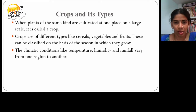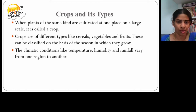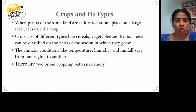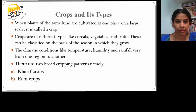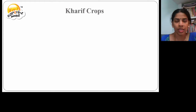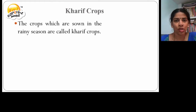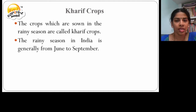Crops and their types. Climatic conditions include temperature, humidity, and rainfall. These climatic conditions vary from region to region. There are two broad cropping patterns, namely kharif crops and rabi crops. The crops which are sown in the rainy season are called kharif crops. The rainy season in India is generally from June to September.